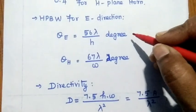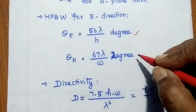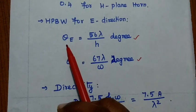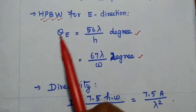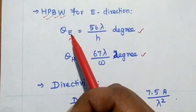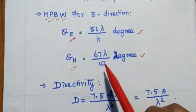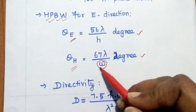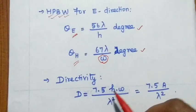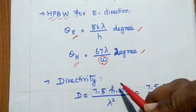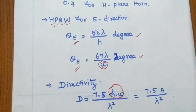The beam width values are derived from the axial length and flare angle. The half-power beam width in the electric field domain is theta_E = 56λ/H degrees, and theta_H = 67λ/W degrees. Directivity D = 7.5·H·W/λ² = 7.5·A/λ², where A is the aperture area.